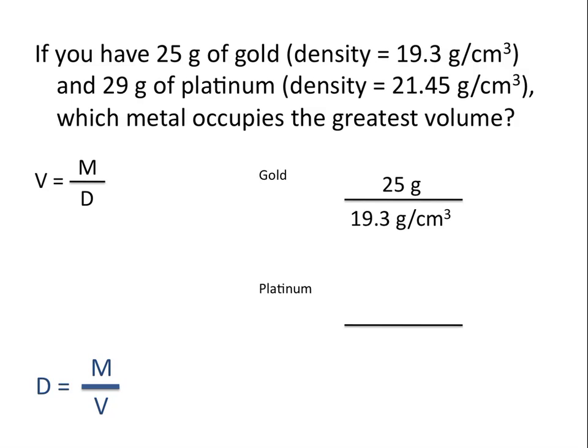Now let's set up our calculation for platinum. We need to put the mass on top, which would be 29 grams, divided by the density, which would be 21.45 grams per centimeter cubed.